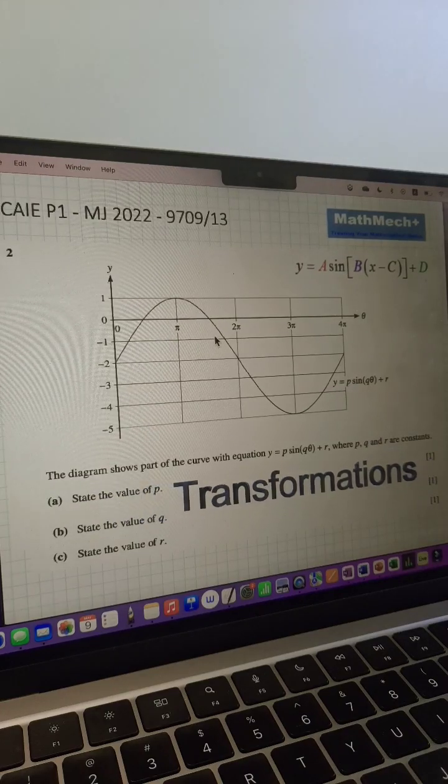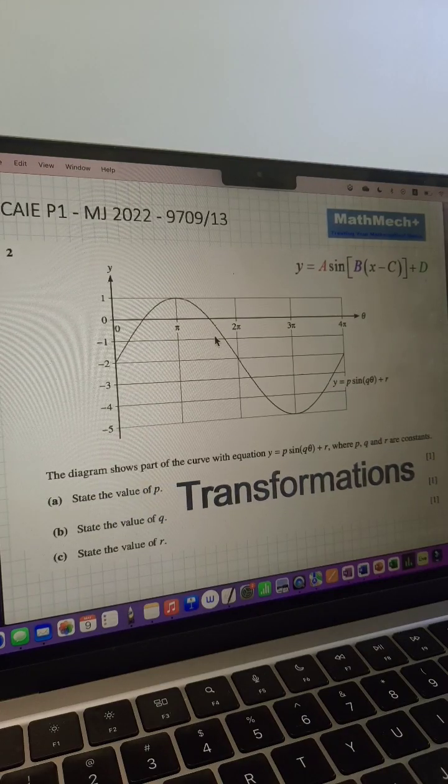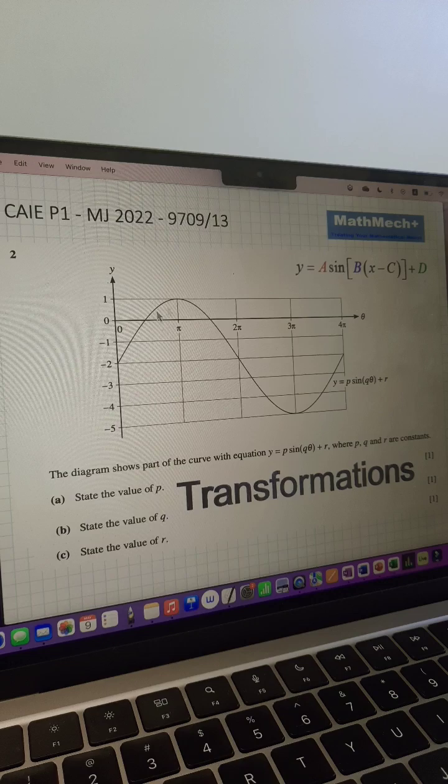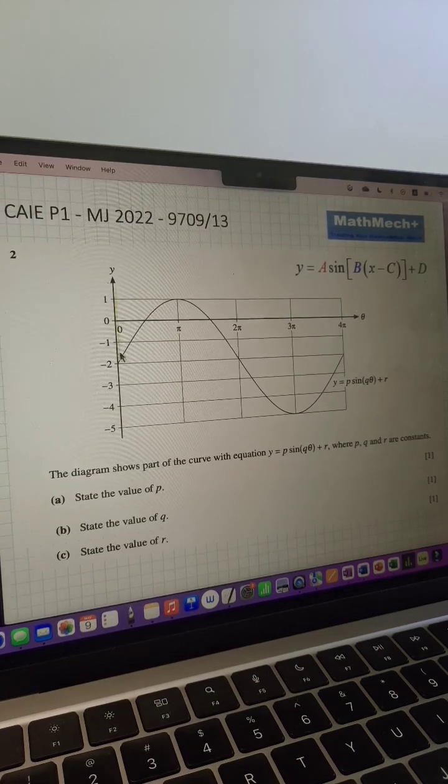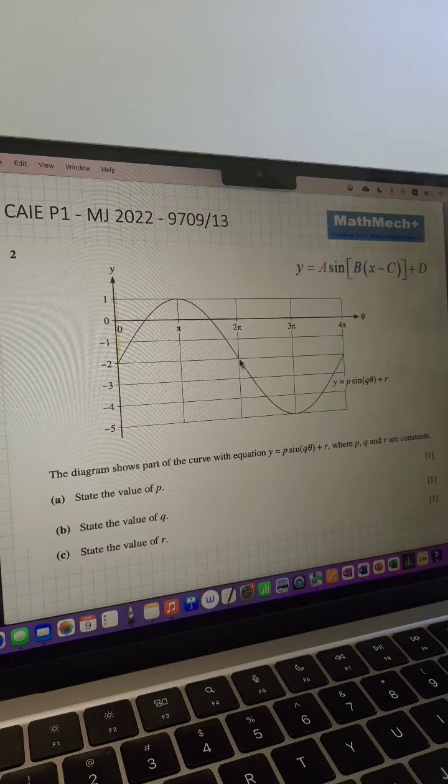In the formula for this transformations question, we're going to look at the details. So we have an equation y equals p sine q theta plus r, and we're trying to basically look at this in terms of those three details.